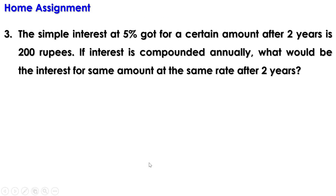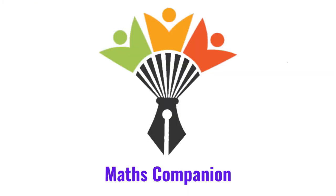Now there is a homework problem: The simple interest at 5% for a certain amount after 2 years is 200 rupees. If interest is compounded annually, what would be the interest for the same amount at the same rate after 2 years? We shall discuss the remaining part in the next video. Goodbye.